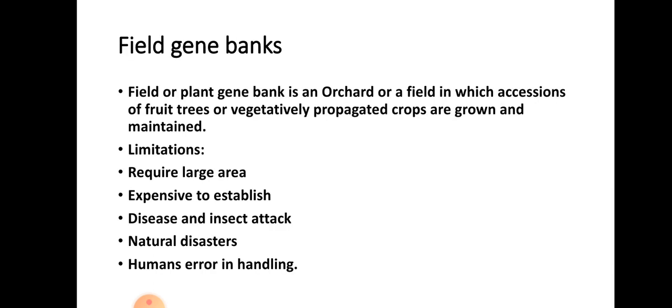A field gene bank is basically a field or orchard in which accessions of fruit trees or vegetatively propagated crops are grown. Field gene banks are made for crop species which do not produce seed or produce recalcitrant seeds. However, limitations include: they require a larger area, are expensive to establish, and are susceptible to disease, insect attacks, natural disasters, and human errors in handling.